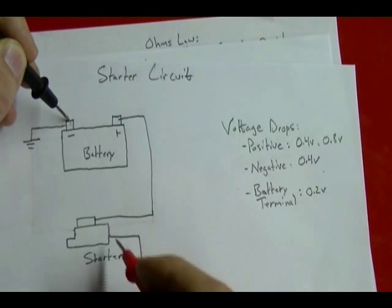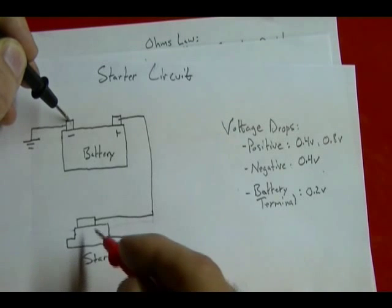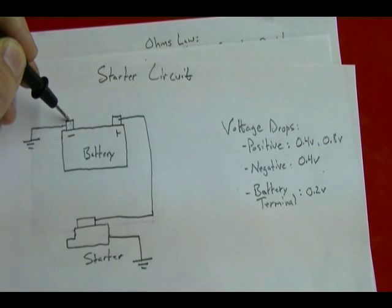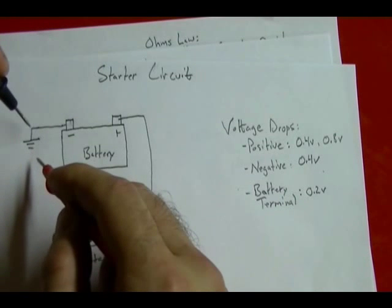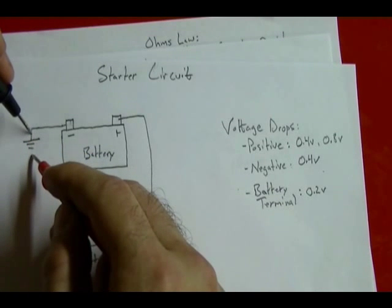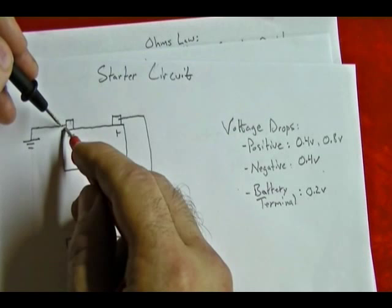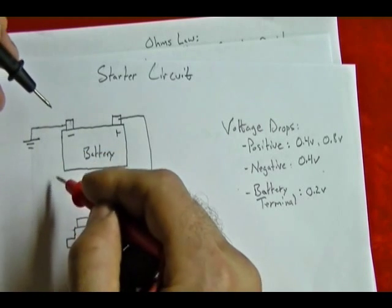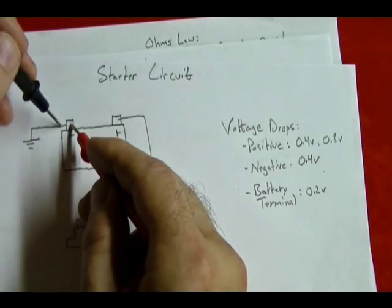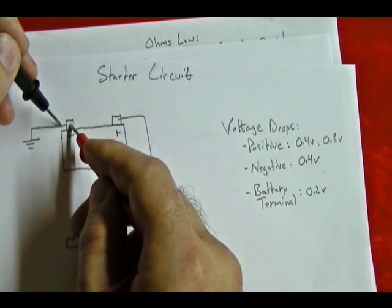If it is higher than 0.4 volts, I would try to narrow it down and check each connection — where the starter is bolted to the engine, where the engine is bolted to the frame — because the current flows from the starter through the engine, through the frame, through the connection where the negative cable connects to the frame, and through the negative cable itself back to the negative terminal of the battery. I could check the cable itself for a voltage drop. The connection between the wire and the terminal of the battery shouldn't be greater than 0.2 volts.